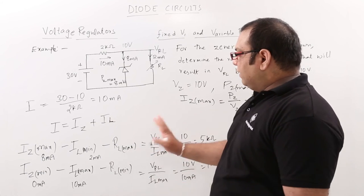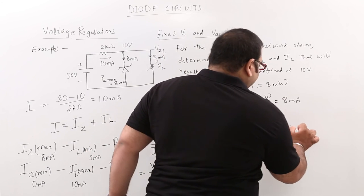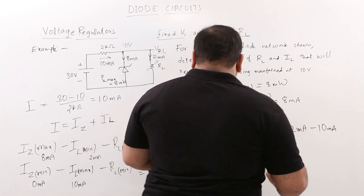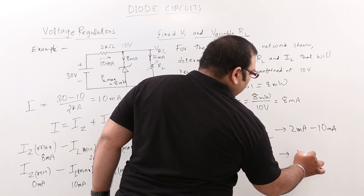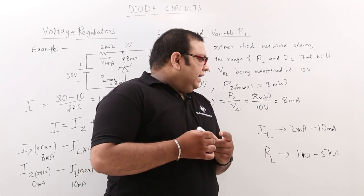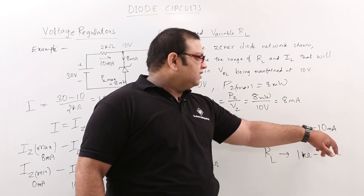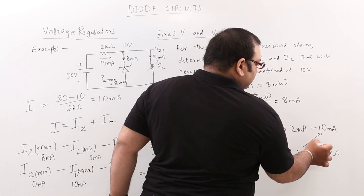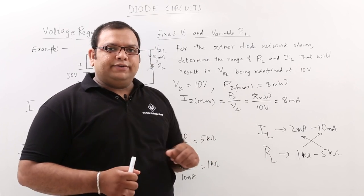From this calculation, the range of IL is from a minimum of 2 milliamps to a maximum of 10 milliamps. The range of RL is from a minimum of 1 kilo ohm to a maximum of 5 kilo ohms. Note that minimum load resistance corresponds to maximum current, and maximum load resistance corresponds to minimum current. This is the answer for this problem.